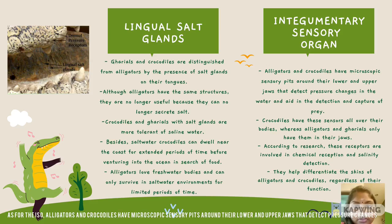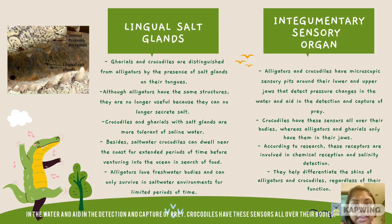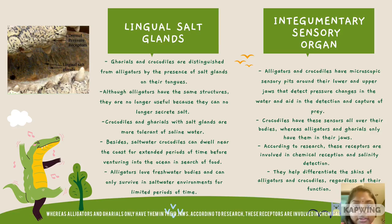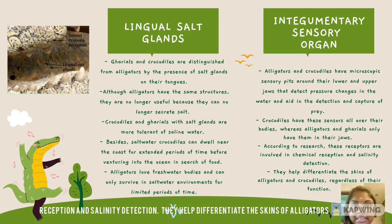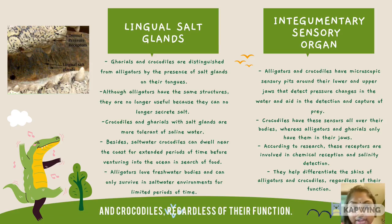As for the integumentary sense organs, alligators and crocodiles have microscopic sensory pits around their lower and upper jaws that detect pressure changes in the water, aiding in detection and capture of prey. For crocodiles, they have these sensors all over their bodies, whereas alligators and gharials only have them in their jaws. According to research, these receptors are involved in chemical reception and salinity detection, and they help differentiate the skin of alligators and crocodiles regardless of their function. Thank you.